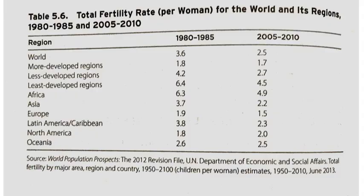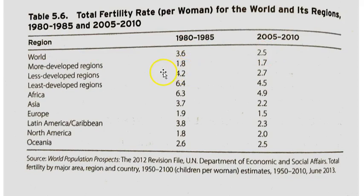If we look at the global level, we can see that in the 1980s the world total fertility rate was 3.6, and that has declined by a full 1.1 children for the 2005–2010 period. More developed regions tend to be much lower than the global average, while less developed regions are much higher. The global average actually leans closer to the less developed end of the spectrum because there are more people there. The least developed regions have the highest fertility rates, and though there are not many countries in that category, they are also where the force of natality is leading to the greatest amount of population growth.